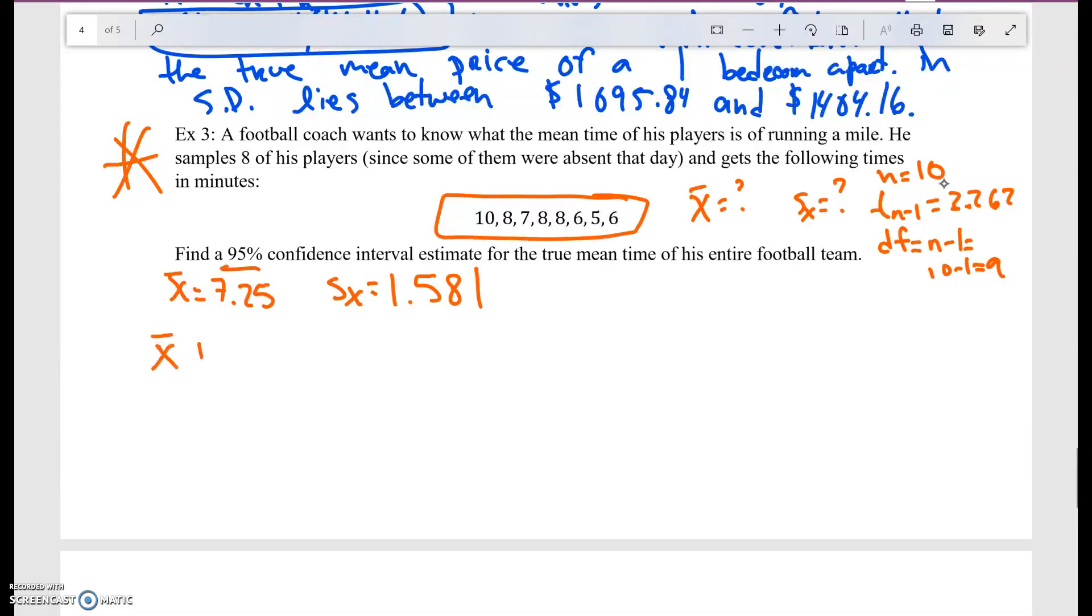We want a 95% confidence interval estimate. So we have x bar plus t n minus 1 s over square root of n. X bar, in this case, is 7.25 plus t n minus 1 gives me 2.262, times s. S is 1.581 divided by the square root of 10.